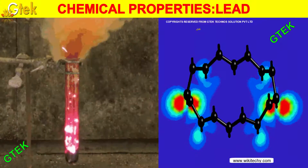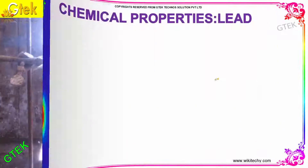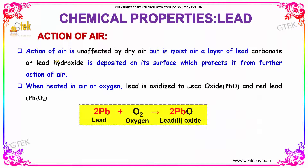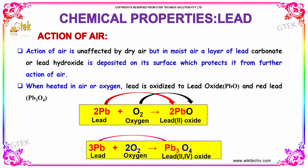If we talk about the chemical properties of lead, the first one is the action of air. Lead is unaffected by dry air, but in moist air a layer of lead carbonate or lead hydroxide is deposited on its surface, which protects it from further action of air. When heated in air or oxygen, lead is oxidized to lead oxide and red lead.